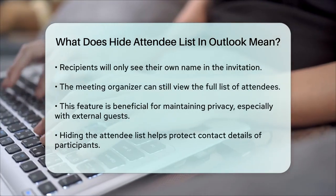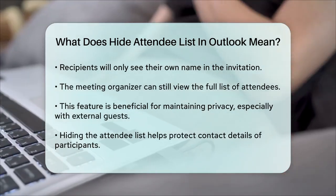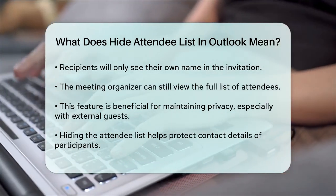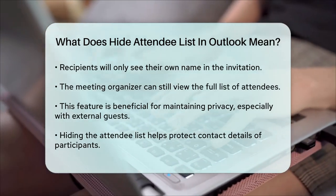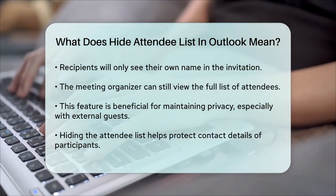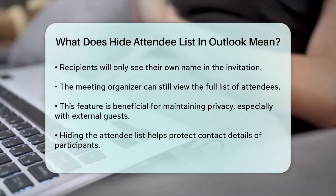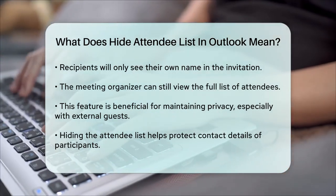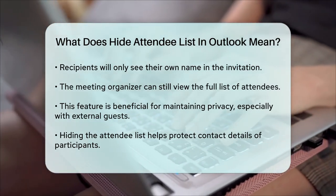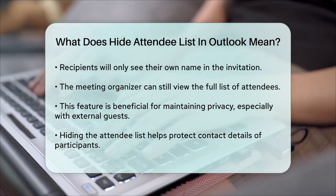This feature is particularly useful if you're dealing with external guests or if you need to maintain privacy for any reason. It ensures that all attendees can join the meeting without their contact details being shared with the rest of the group. So, to summarize, hiding the attendee list in Outlook allows you to send meeting invitations while keeping the list of attendees private, which can be very handy in various scenarios.